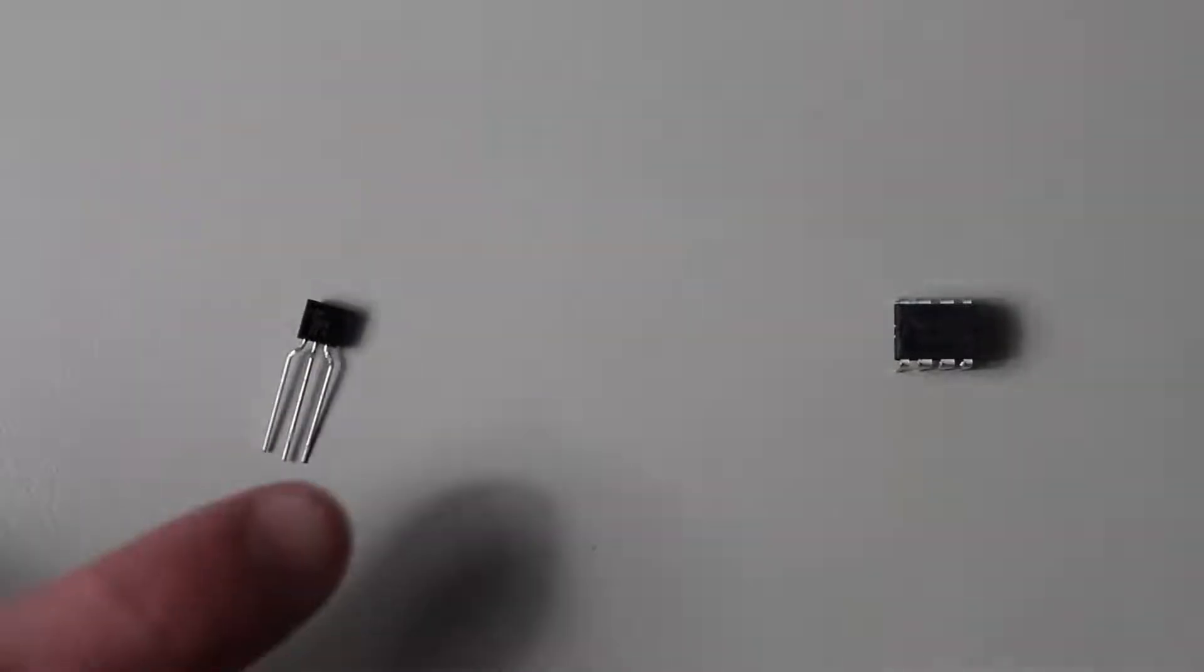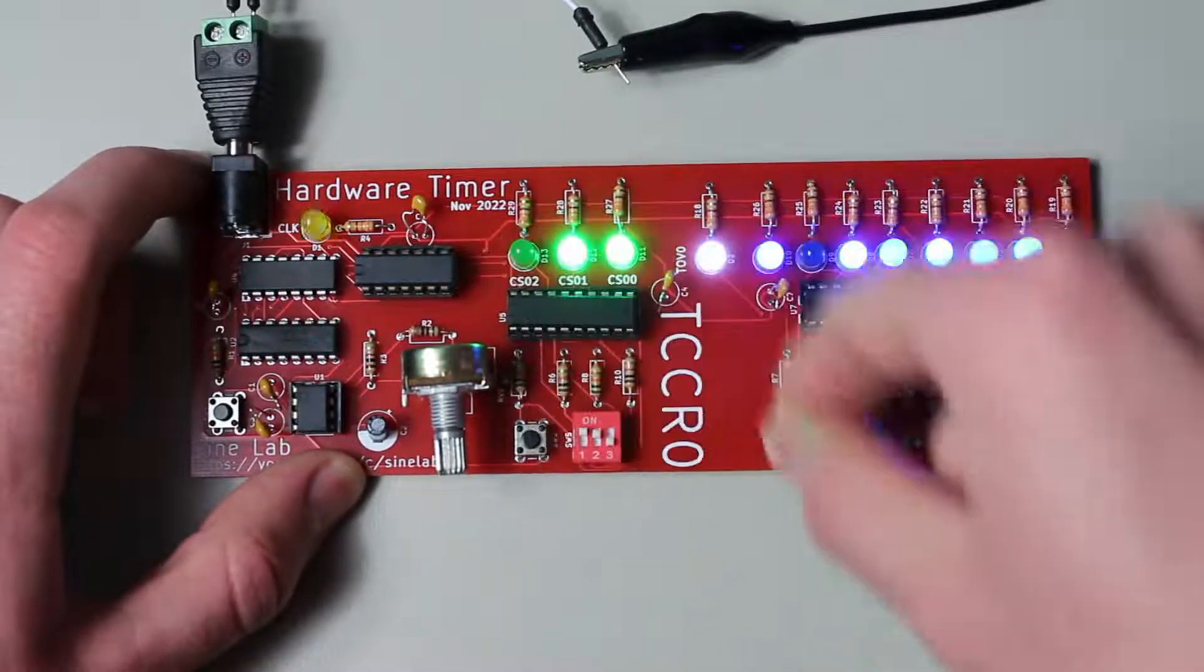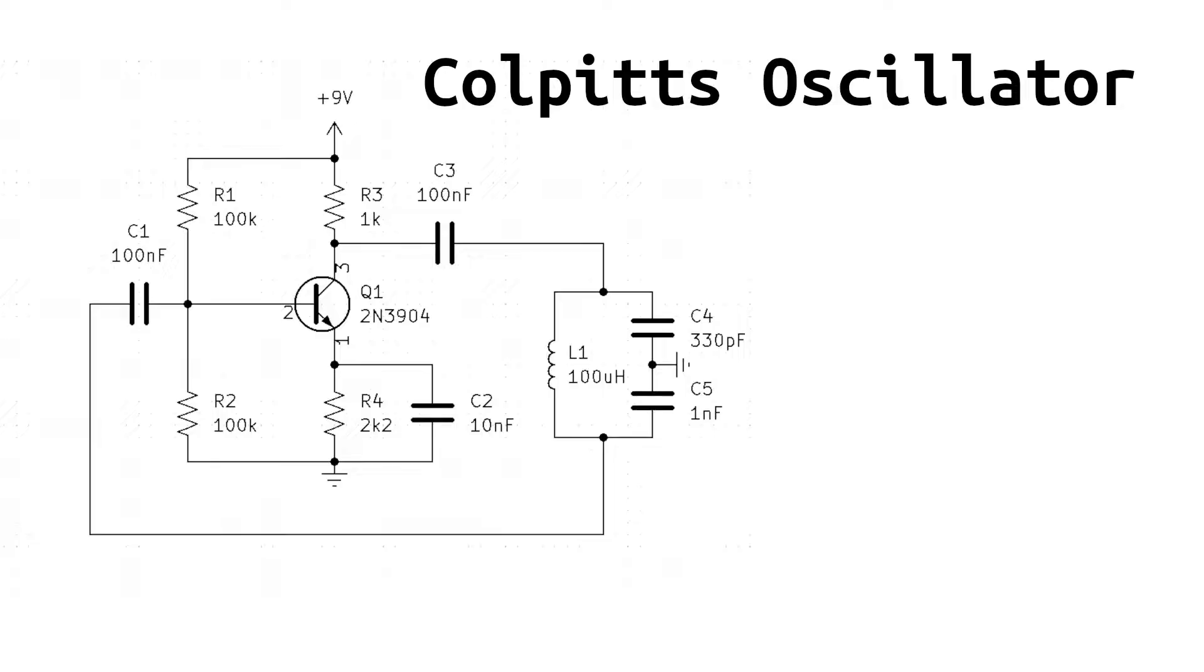Some of you may have already thought of oscillators that could generate our carrier wave, such as the infamous 555 timer. Well, we are going to use what's called a Colpitts oscillator. This is because LC oscillators are better at running at higher frequencies, like we are going to do for our 1 MHz signal.